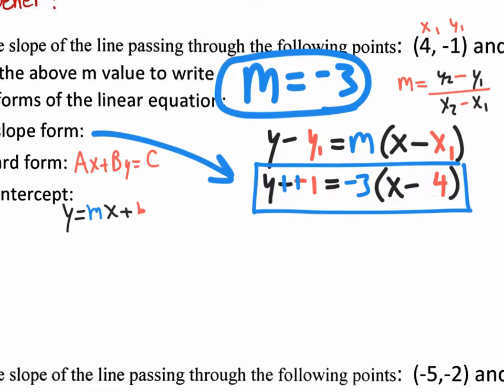So we need to get rid of those parentheses — in other words, we need to distribute. Negative three times x is negative three x. Negative three times negative four is positive twelve. Now bring down the equal sign, bring down the y plus one.